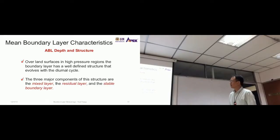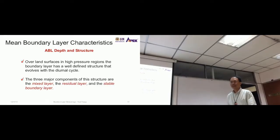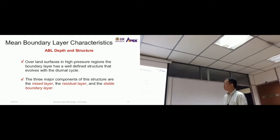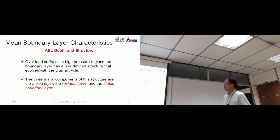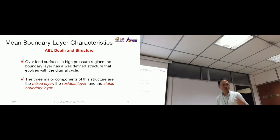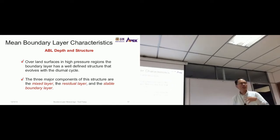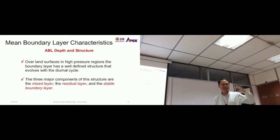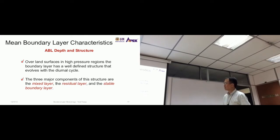Now we go into the ABL depth and structure topic, still under the mean boundary layer characteristics. We talked about the characteristics of turbulence and what generates turbulence. Here we talk about the structure of the atmospheric boundary layer — the different layers and the depth of each of the sub-layers.